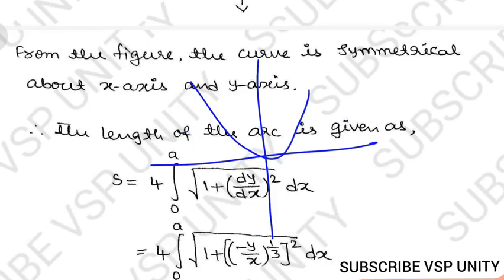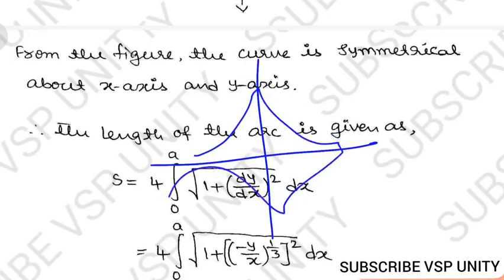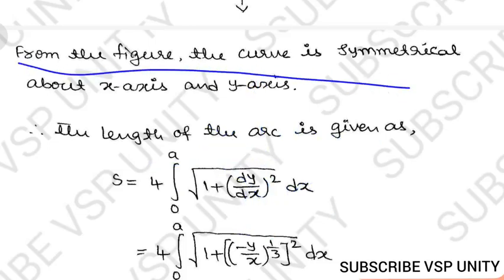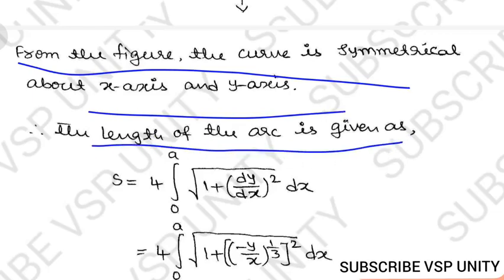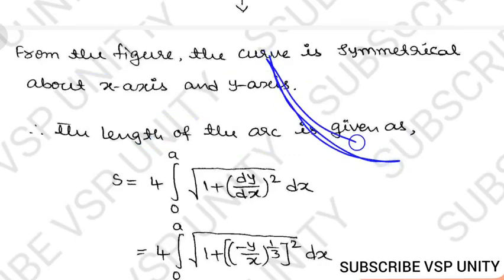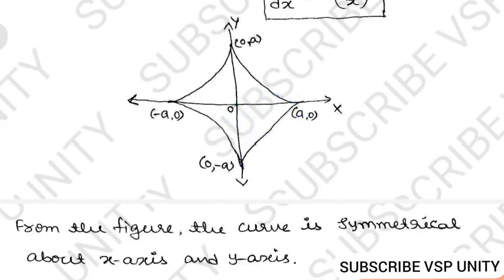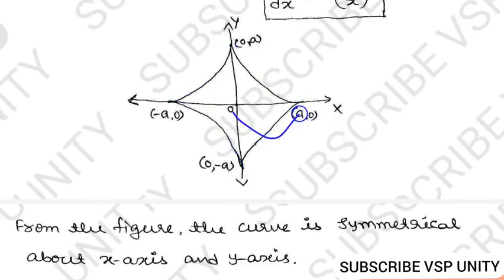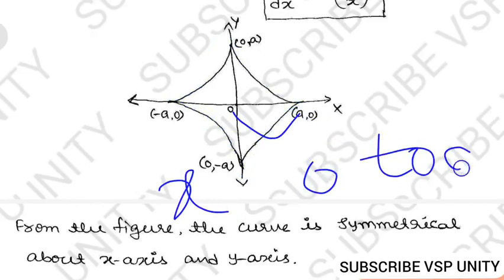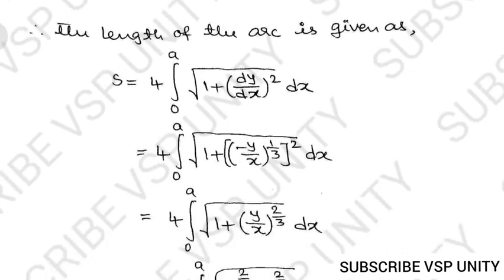Because the curve is symmetrical about both the x-axis and y-axis, all four arcs are equal. So the total length S = 4 times the length of one arc. Taking x changing from 0 to a as our limits for the first-quadrant arc, we write: S = 4·∫₀ᵃ √(1 + (dy/dx)²) dx.